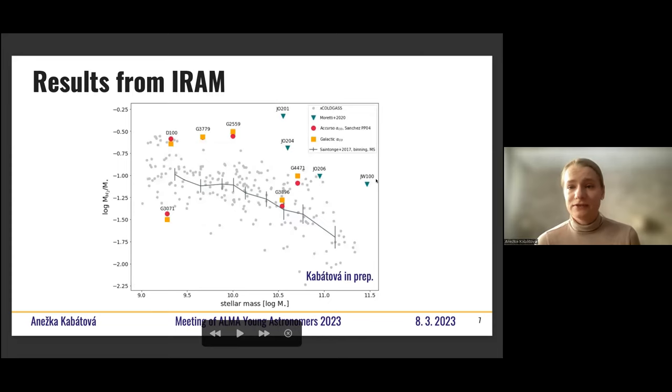So one of the most interesting things that we kind of didn't expect is this plot. So I'm going to introduce it to you. There's on x-axis the stellar mass. On the y-axis, there's ratio of molecular gas and stellar mass. In gray, you can see the field galaxies from a cold gas reference sample. Those are not cluster galaxies. So you can expect them to kind of act naturally. And then there's this line that shows the mean of the distribution.